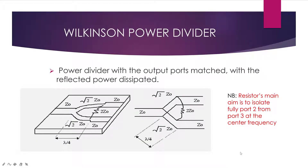Our main aim today is to look at the Wilkinson power divider and also design it in ADS. A Wilkinson power divider is a power divider with output ports matched with reflected power dissipated. Looking at this diagram, which is the geometry equivalent of the Wilkinson power divider, we can see that we have Z naught at the input and Z naught at each of the outputs. This means that the output of the Wilkinson power divider is matched with the characteristic impedance of Z naught.